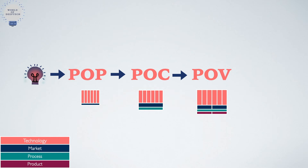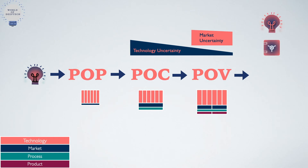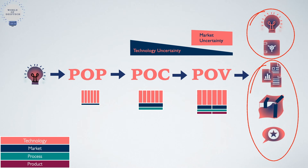Through the proof of concept and proof of value stages, the uncertainty and risk related to technology is significantly reduced. A proof of value demonstration also reduces market uncertainty, but marginally. The outputs of a successful proof of value demonstration are different forms of IP assets and know-how related to it, data and reports from the demonstrations, working prototypes that demonstrate the value to the customers, and testimonials from these first customers. While the first two of these are central to the value of the technology, the other three are incidental and are supporting evidence.